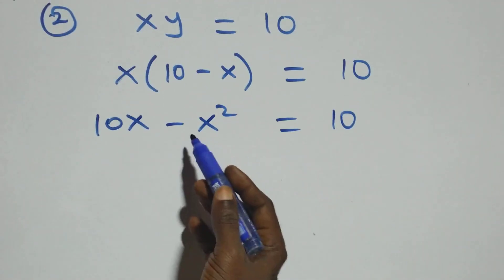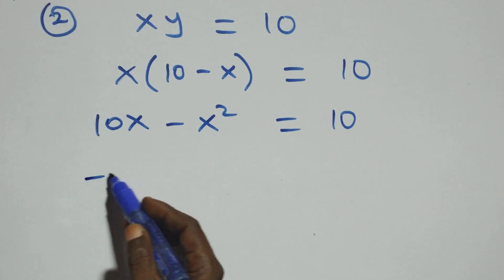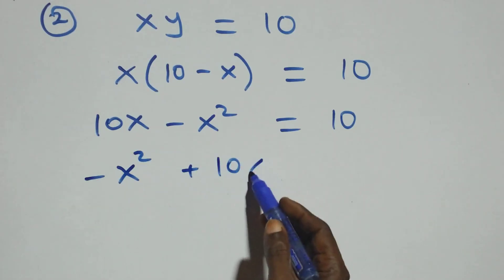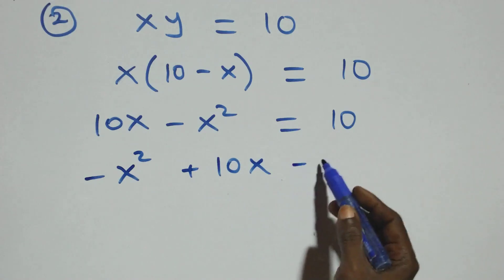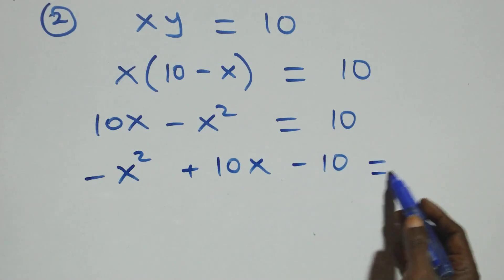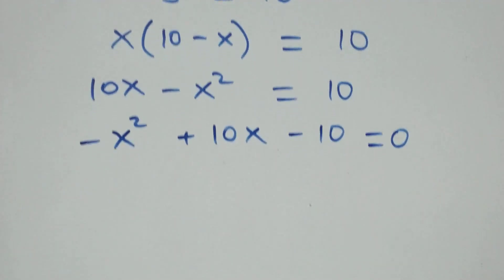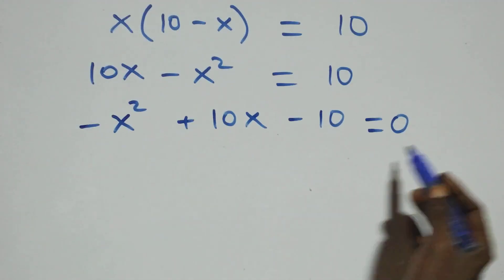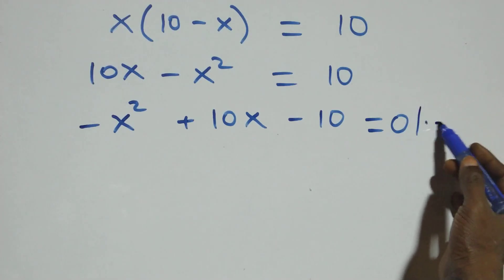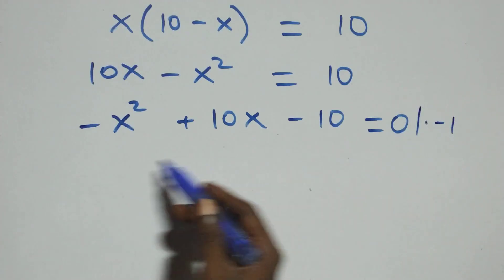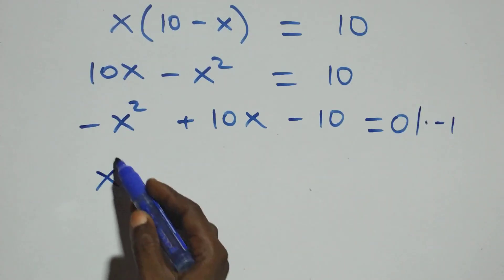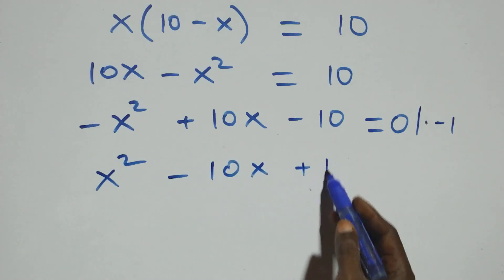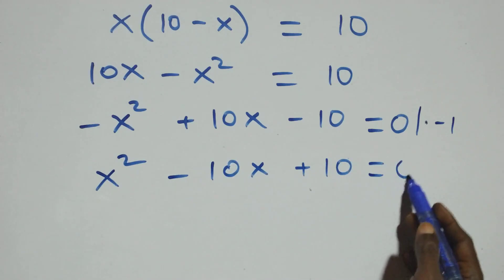We rearrange this: we have minus x squared plus 10x minus 10 equals 0. Then we multiply through by minus 1 and we get x squared minus 10x plus 10 equals 0.